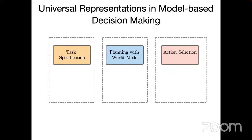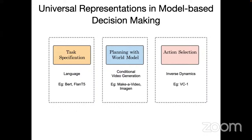The idea is to take insights from recent language models: use language as a generic task specification for a large number of tasks, and use images as a generic state representation. Although many tasks have different state spaces, their visual images end up looking similar. So you can use conditional video generation to depict the sequence of states, and use inverse dynamics for action selection. We call this a universal policy — it's essentially the decision diffuser framework with task specification replaced by language and the world model replaced by video.